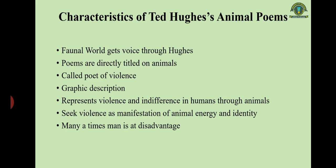Let's talk about the characteristics of Ted Hughes's animal poems. The faunal world — the world of animals — gets voiced through Hughes. Different writers have addressed different subjects over the centuries; for Hughes, the animal world is central. Around 80 percent of his poems are titled after animals. For this reason — especially his depiction of violent animals — he is called the poet of violence.